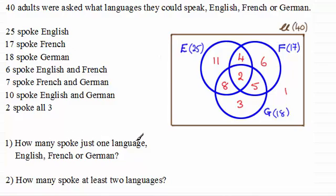How many spoke just one language, English, French or German? Well, that's got to be the result of 11 for English only, six for French only, and three here for German only. So the answer then will be 11 plus six plus three. And that gives us a total of 20.